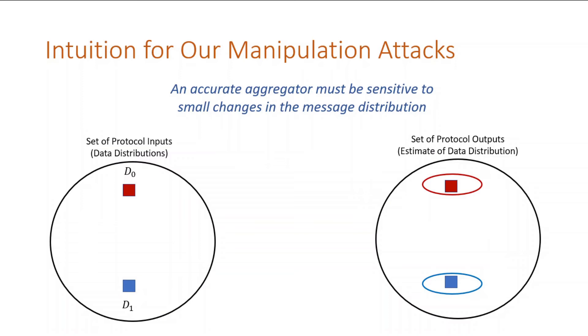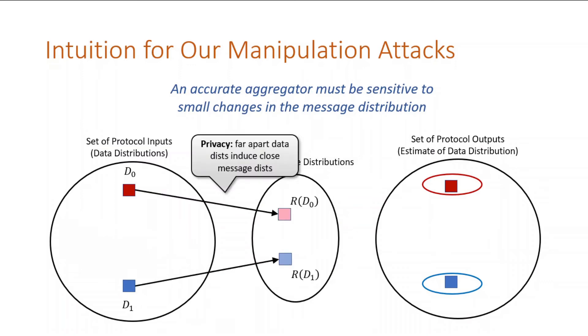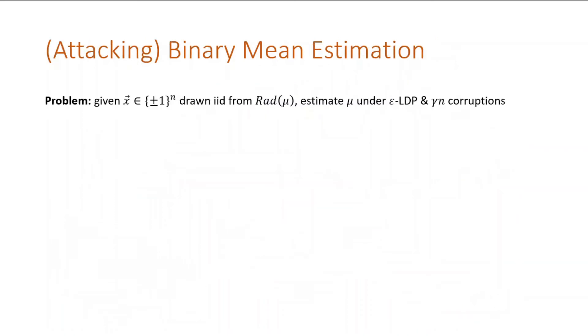But the aggregator in a local protocol does not operate on the raw data. It instead gets messages from a local randomizer. And the definition of local privacy means that the two input distributions must be mapped close together in this message distribution space. So in order to be accurate, the aggregator has to be sensitive to the signals found in messages. We'll exploit this sensitivity in our attacks. Corrupt users will send messages that shift this distribution.